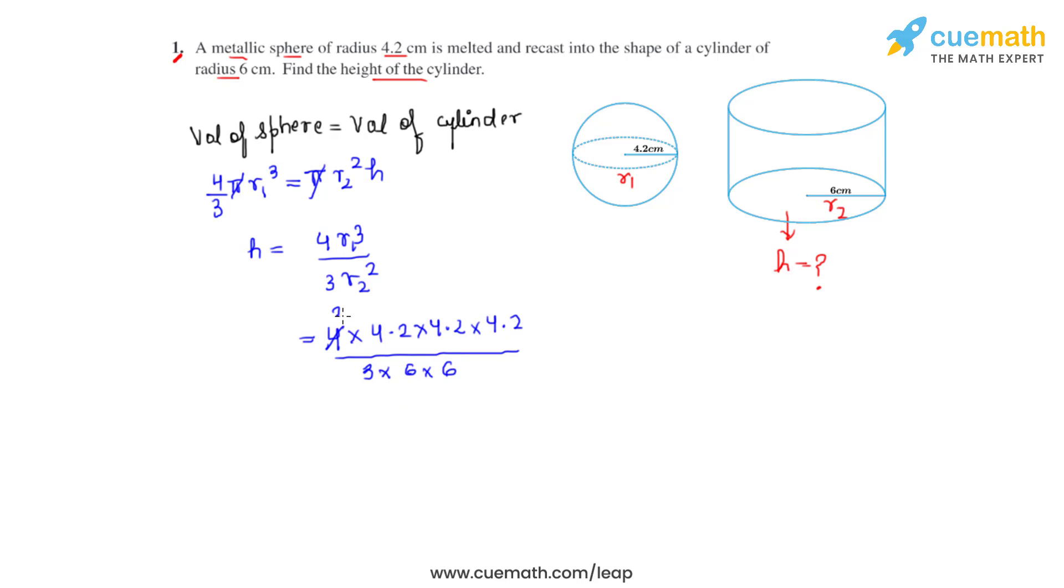We know that 3 times 1.4 will give us 4.2, so we can cancel out 4.2 by 3. If we do the further calculation, we get the height of the cylinder to be equal to 2.74 centimeters, and this is how we solve this question.